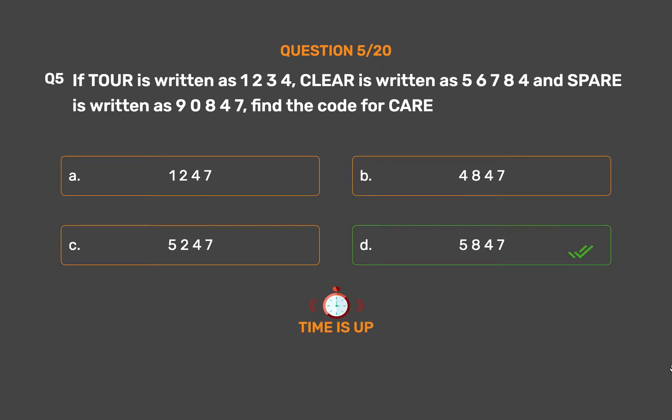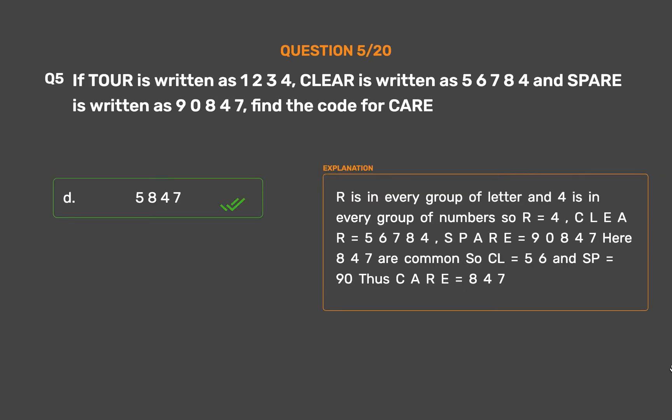The correct answer is Option D: 5847. R is in every group of letters and 4 is in every group of numbers, so R=4. CLEAR=56784, SPARE=90847. Here 847 are common, so CL=56 and SP=90. Thus CARE = C+A+R+E = 5+8+4+7 — wait, CARE = 5847.